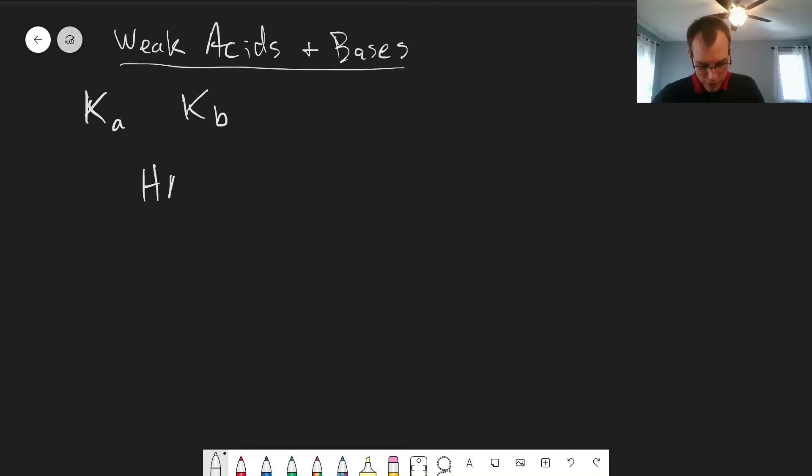So when we're thinking about a weak acid, we have a chemical species that donates a proton. And so we write this equilibrium as the weak acid dissociating into a proton and an anion. The charges may not always be exactly this, but this is sort of a generic reaction.